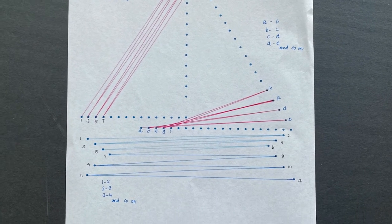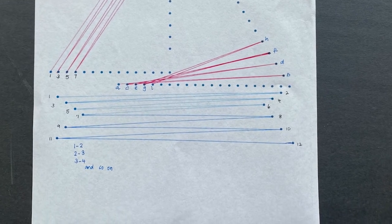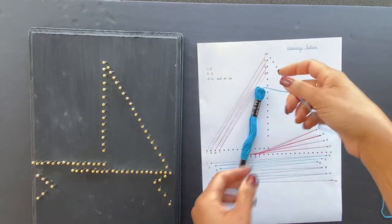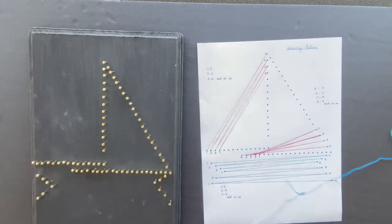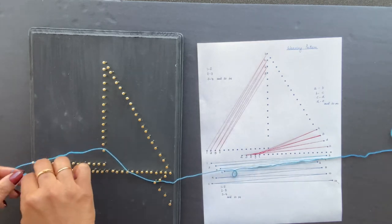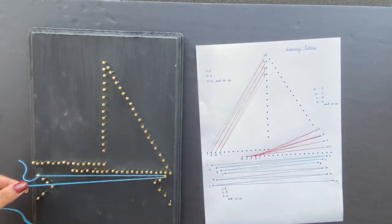Now using the weaving pattern image as a reference, we can start the project. I'm starting with the hull first. Tie the light blue string onto a nail, securing it with a knot. Use the sequence 1 to 2, 2 to 3, and so on.